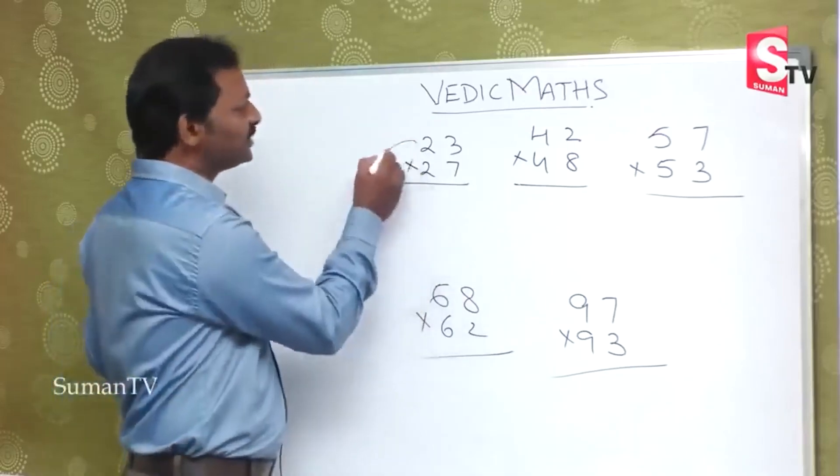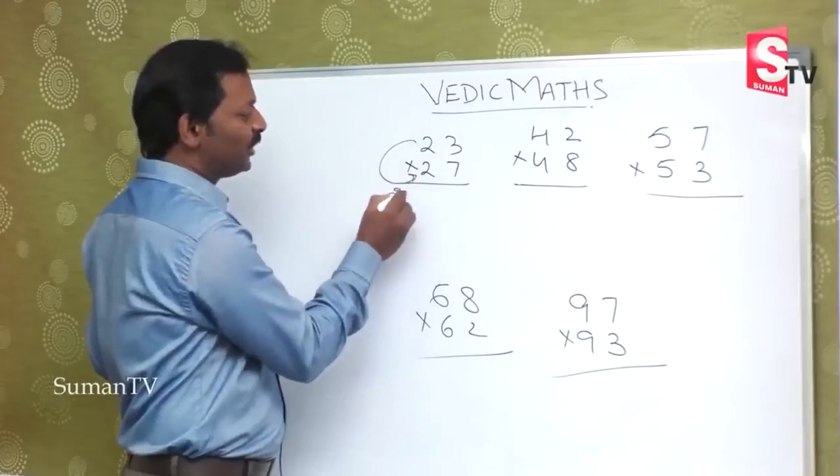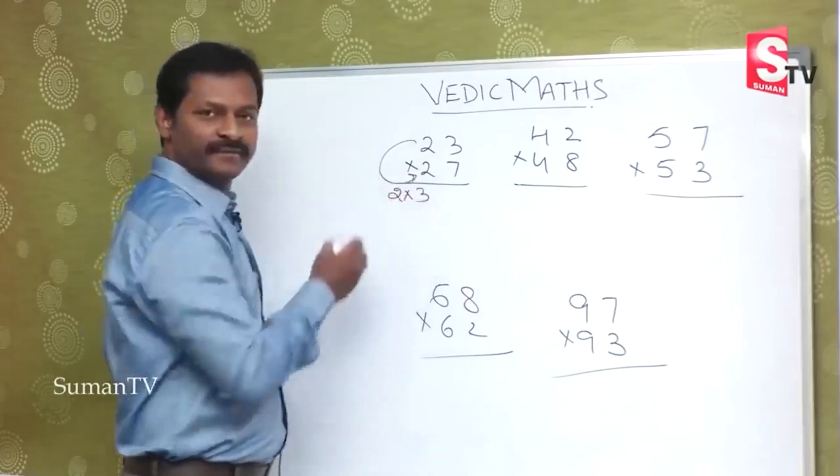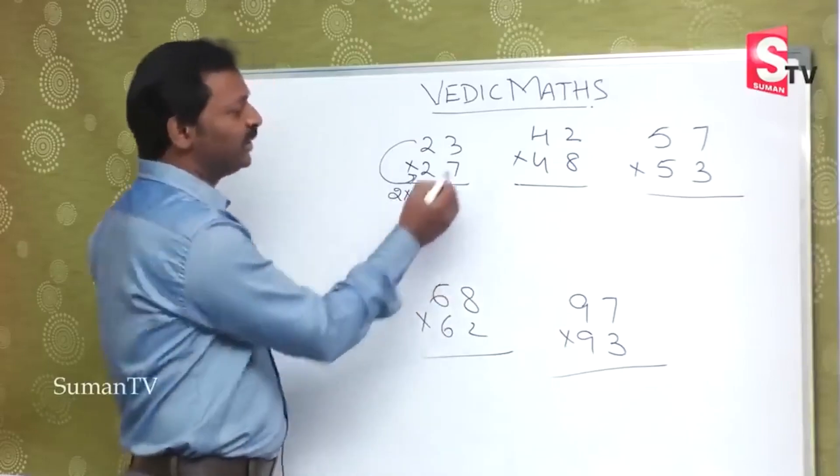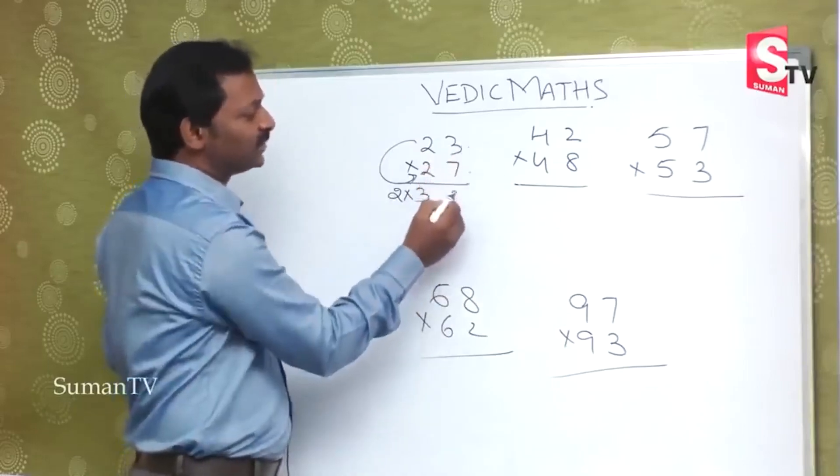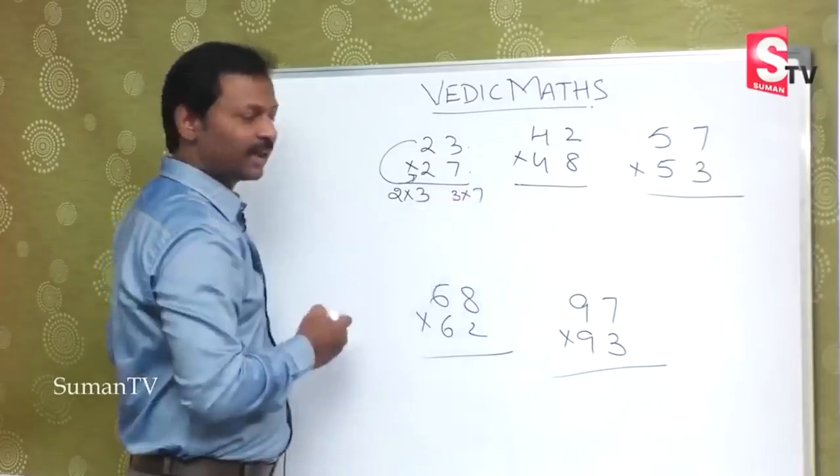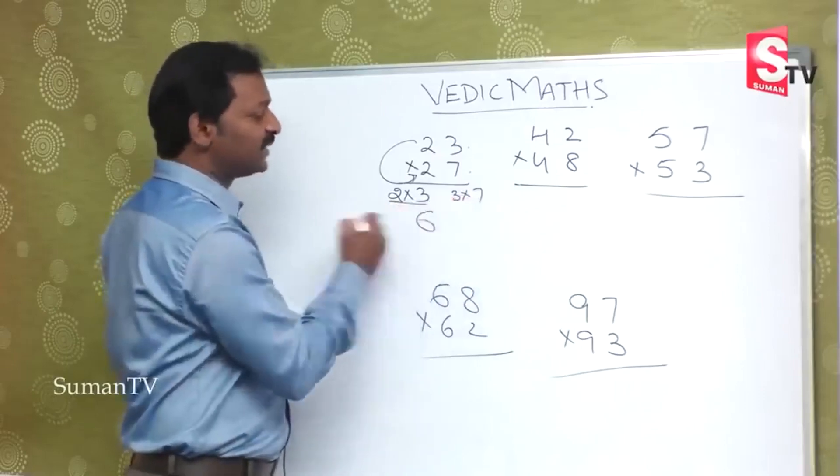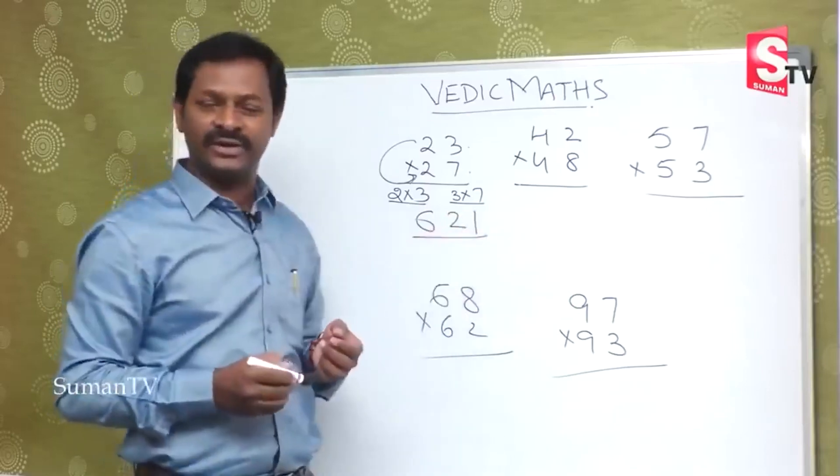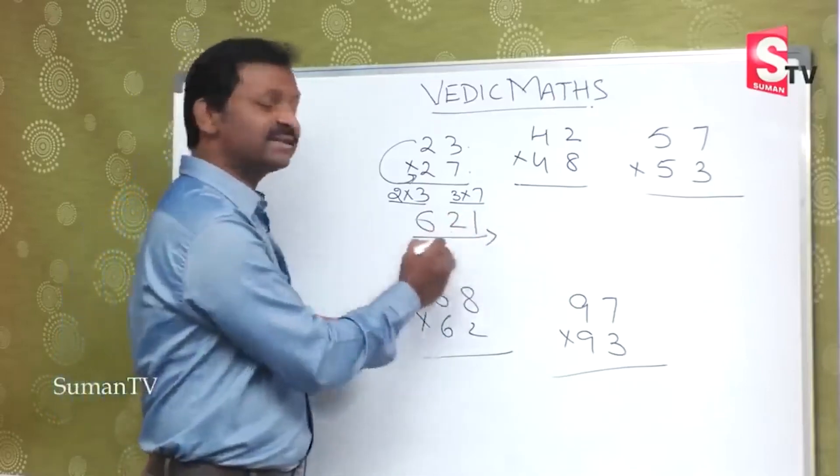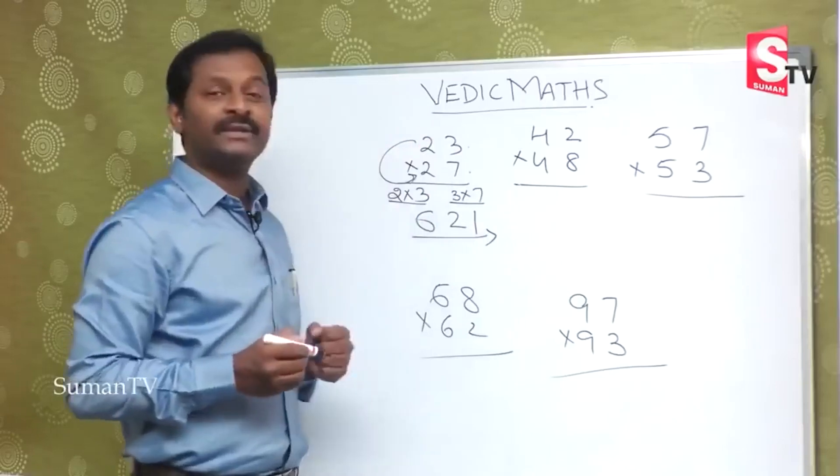The procedure: first number into next number, 2 into 3. First number is 2, then next number is 3, 2 into 3 is 6. Then 3 into 7 is 21. The answer is 621. We are writing from left side to right side.